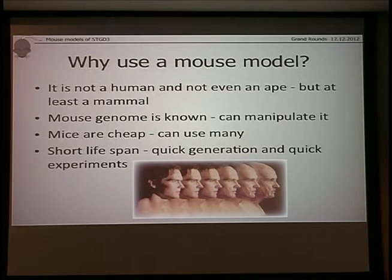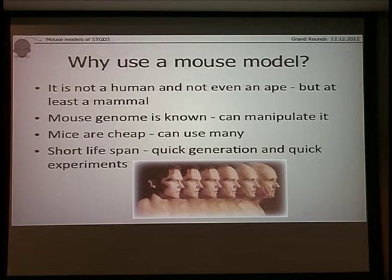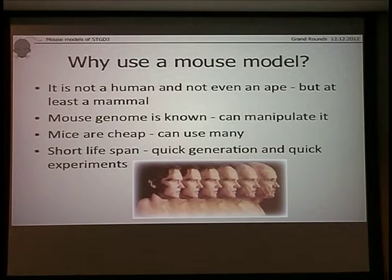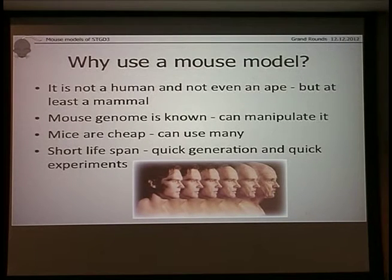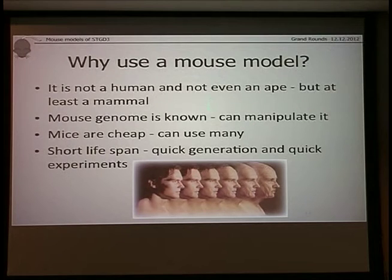Why use mouse models specifically? Mice have the advantage of being mammals, so at the biochemical level their retina is pretty similar to humans. Because they are not humans or even apes, the ethical issues are much simpler to tackle. We can manipulate the genome of the mouse, which is already sequenced. We have ethical allowance, the technical ability, and it is not so expensive that we cannot do it economically. So it is feasible to use mice as models and they are used for many diseases.